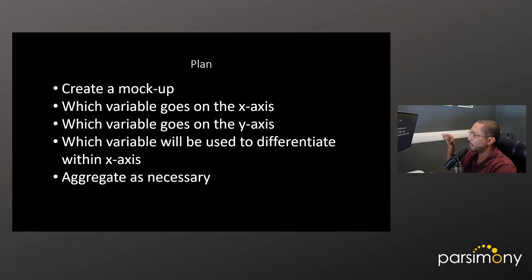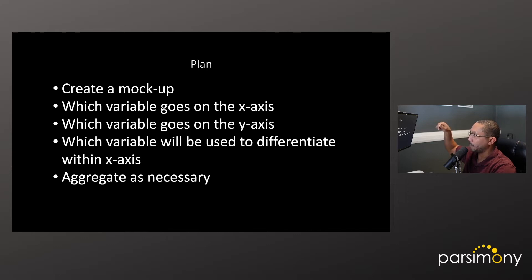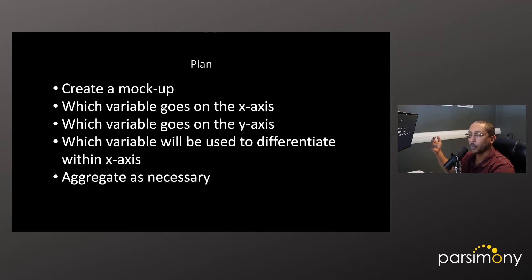For example, along the x-axis you might use a participant's race, so you'd have different categories for race. Then within each of those categories, the bars could be differentiated by gender — for example, within white participants you could have male, female, and non-binary, and those same groupings within each other race category. Once you've identified those elements, you're ready to aggregate the data, because now you know how you need to aggregate it in order to produce the grouped bar chart.